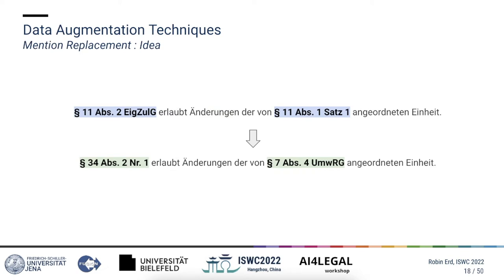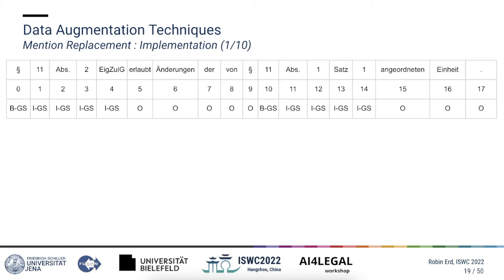The second technique is called mention replacement and is somewhat similar to synonym replacement, except that instead of the non-mentions, the mentions are replaced. The replacements are random entities of the same semantic class from the training split of the dataset, and we always replace all mentions in a sentence. The terms 'mention' and 'entity' can be used interchangeably when talking about named entity recognition. Again we have a sentence and during the next slides we will create a modified copy of it.